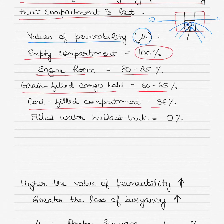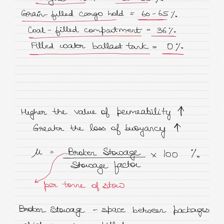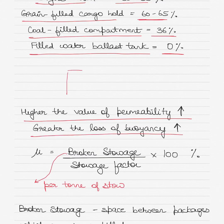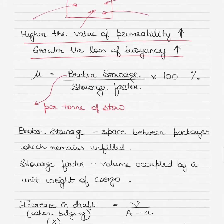A coal-filled compartment has a permeability of about 36%, because a lot of water gets absorbed by the coal. A filled water ballast tank has a permeability of 0%, because it is already full — water will enter and exit equally, so buoyancy was already lost and it won't make a difference. Remember: the higher the value of permeability, the greater the loss of buoyancy. If a compartment was empty before and fills with water, permeability is 100% and all buoyancy is lost.